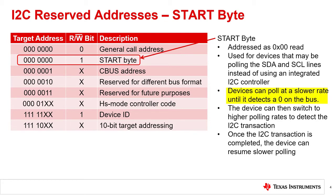When the controller uses the start byte with seven zeros in the address, the target device can poll at a much slower rate, saving processing power. After the target device detects that the SDA has gone to zero during the start byte, it can then switch to faster polling to detect the next I2C transmission for the address being sent. Once the I2C transfer has ended with a stop condition, the target device can then resume polling at a slower rate, again saving processing power.